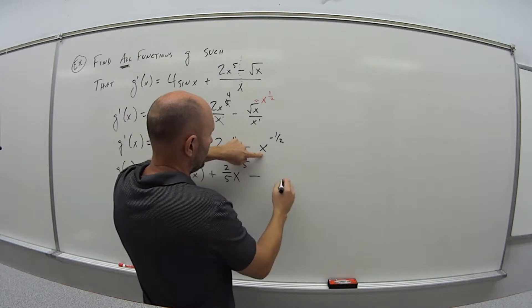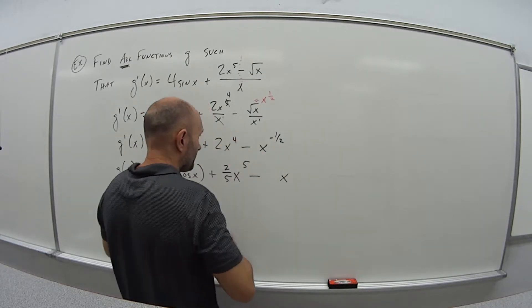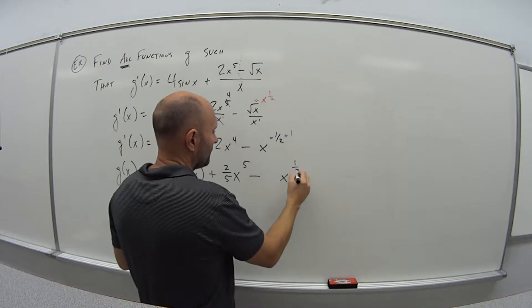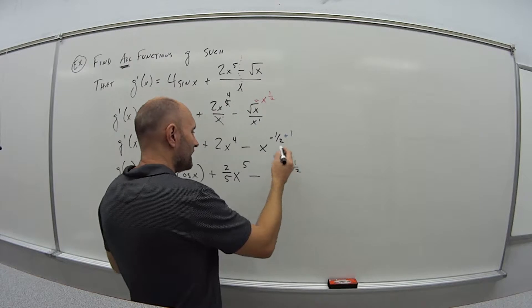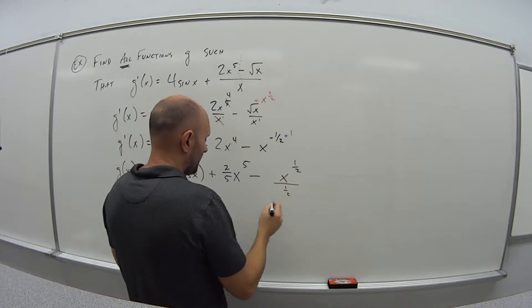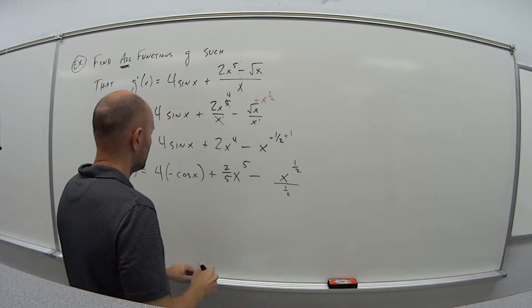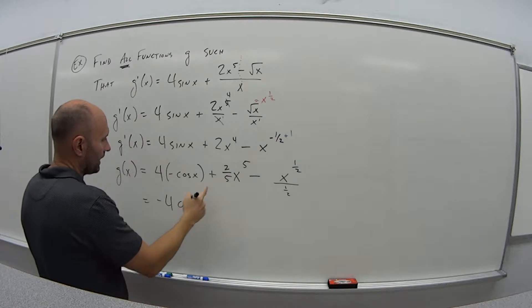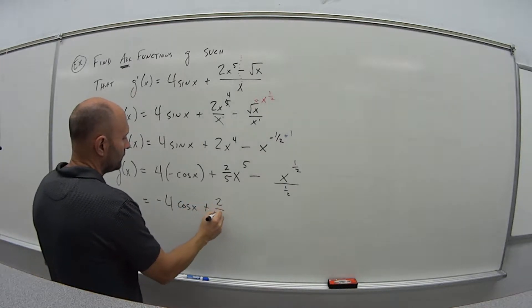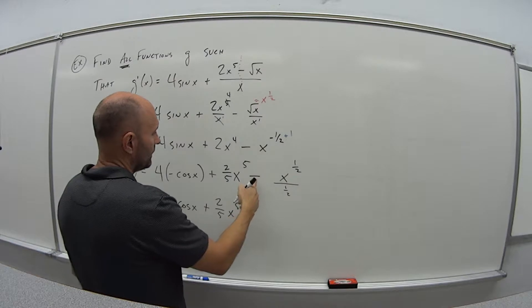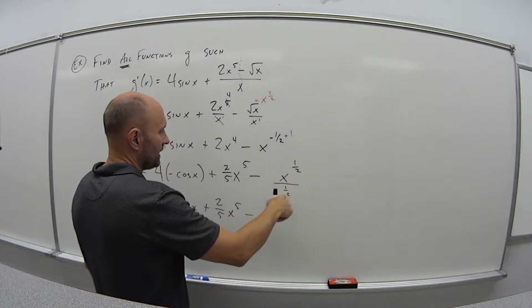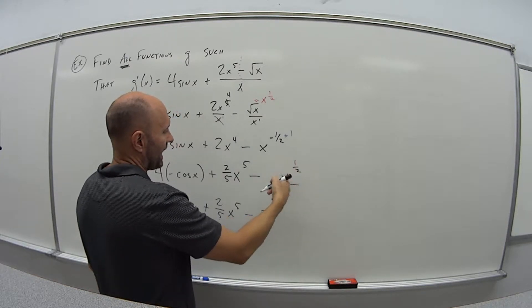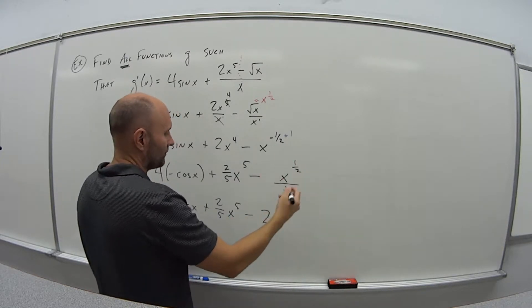And now here, minus. So we're going to do the same thing, x. I'm going to add 1 here. So that's what? Negative half plus 1 is positive half. And then divide the whole thing by positive half. So that means I have minus 4 cosine x plus 2 fifths x to the 5th minus. And if I keep change flip, that's going to put a 2 in front here and leave me with x to the half. Well, x to the half is the square root of x.